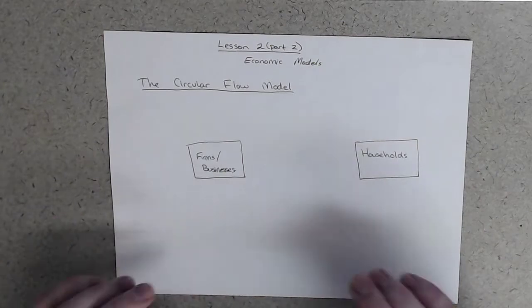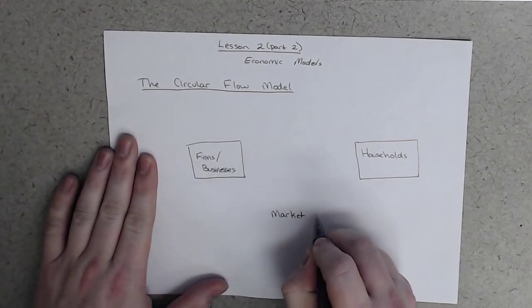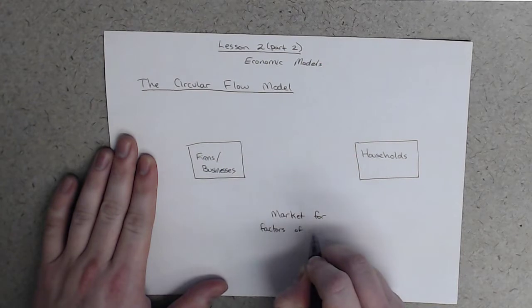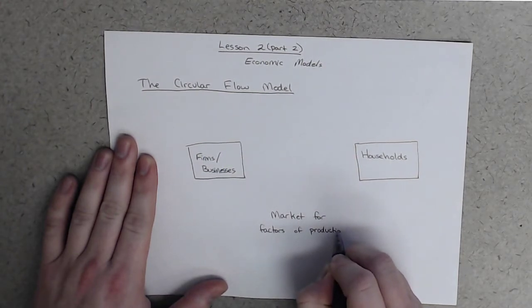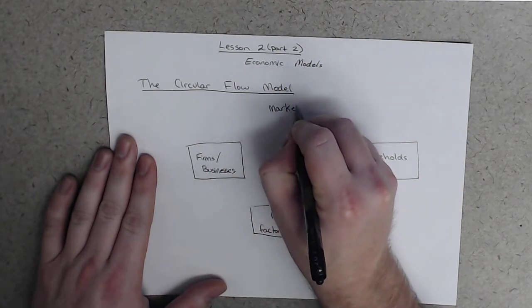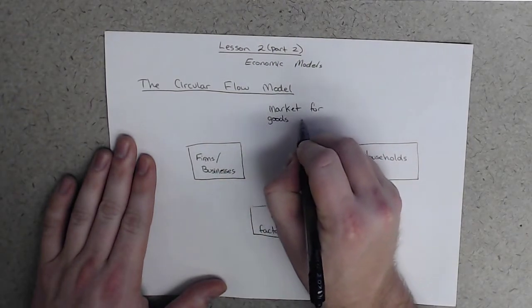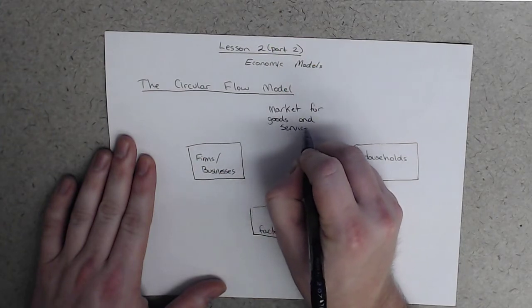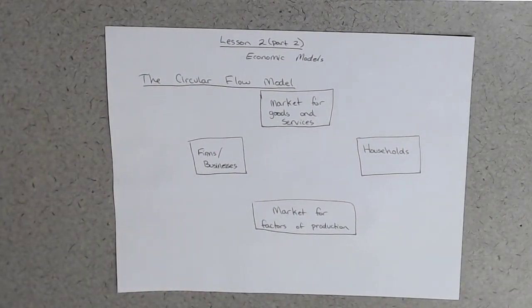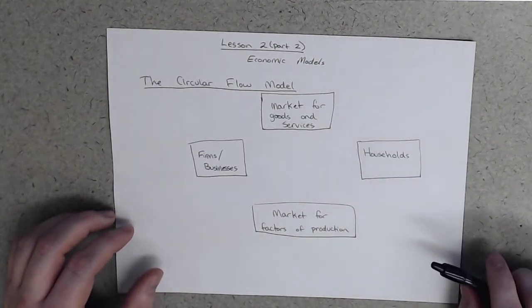And then we're going to say that there are two markets. We're going to say that there is the market for factors of production. I'll put it in a box. And then there are the market or markets for goods and services. And so that's it. We're going to say that there are two markets in this world or two kinds of markets in this world. There's the market for factors of production and there's the market for goods and services.